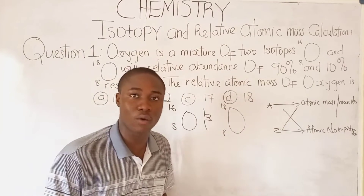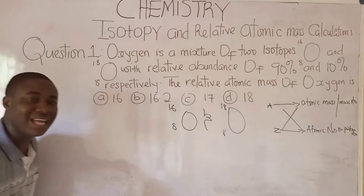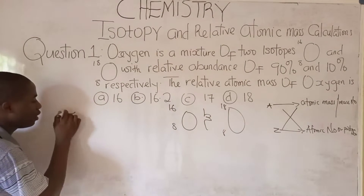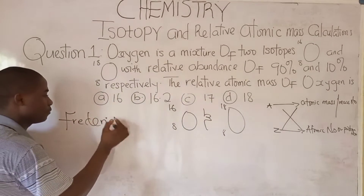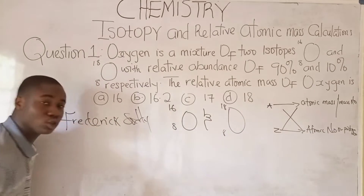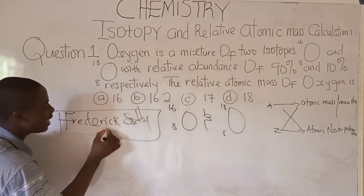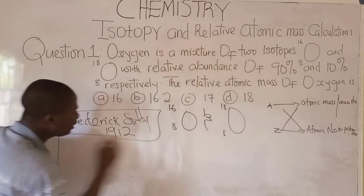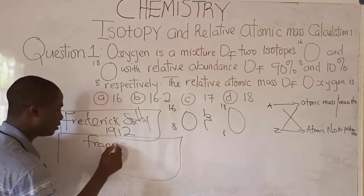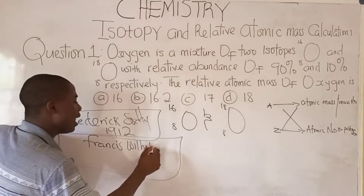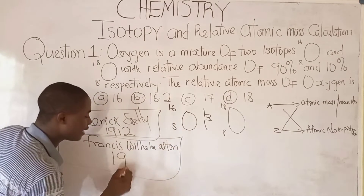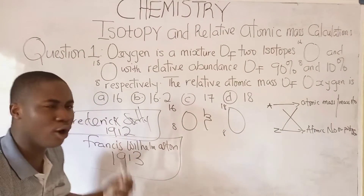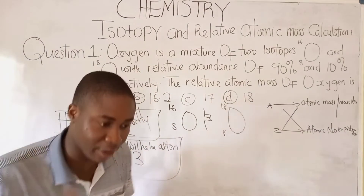It must be noted that the first hypothesis on isotopic discovery was done by a man called Frederick Soddy. The first isotopic hypothesis was done by Frederick Soddy in the year 1912. But a year later, another man called Francis Wilhelm Aston rediscovered isotopy — that would be 1913.